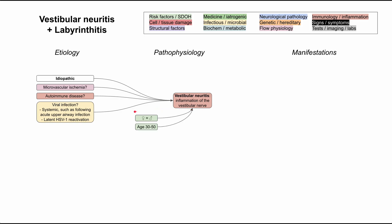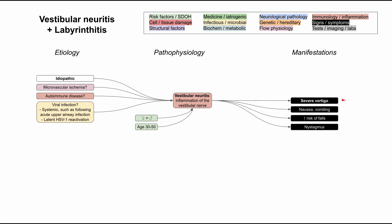Some risk factors: vestibular neuritis is most prominent in people aged 30 to 50, and there's no gender predisposition — it's equally likely in women as in men. The manifestations of vestibular neuritis include vertigo as the most prominent symptom. You can have associated nausea and vomiting, and with vertigo, you'll also have an increased risk of falls.